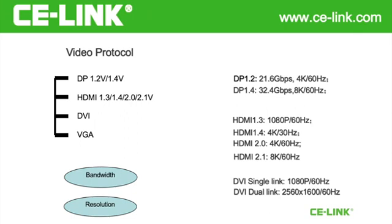Next is DVI. There are two types of DVI: single link and dual link. The maximum resolution of single link is 1080p 60Hz, and the maximum resolution of dual link is 2560×1600 at 60Hz.